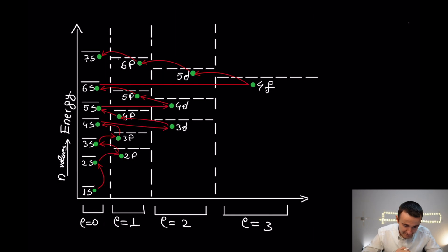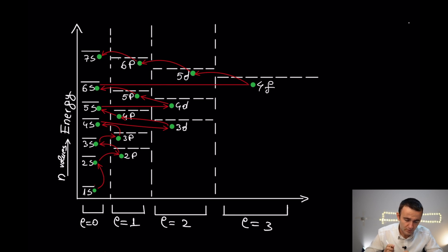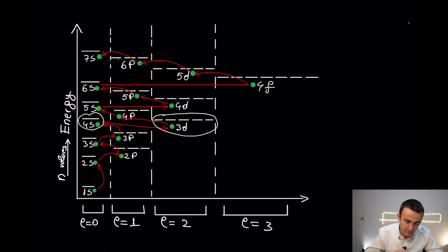Here is another scheme that shows the energies of the orbitals. We can see from here, for example, why 4s fills before 3d — because 3d is at a slightly higher energy level than 4s, as predicted by the Aufbau principle.